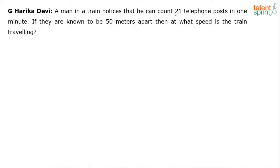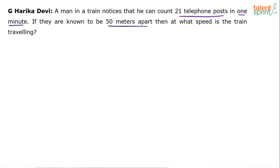A man in a train notices that he can count 21 telephone posts in one minute. The posts are known to be 50 meters apart. At what speed is the train traveling? This is a very interesting and also simple problem. There is a man sitting inside a train who notices 21 telephone posts in one minute, and they are 50 meters apart.